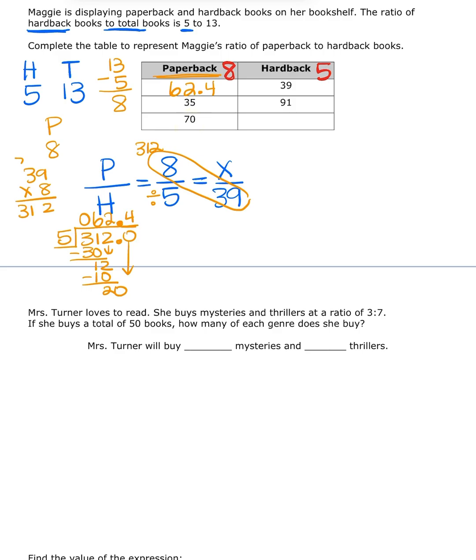So this time, my WKU is still paperback to hardback. And I'm still using the ratio of 8 to 5. Remember, I got the 8 by subtracting total minus hardback. And then I know my question is here. And it's 70 paperback, right? 70 paperback. So I'm going to put on the P, put 70. And X is my hardback. So again, I'm going to cross multiply.